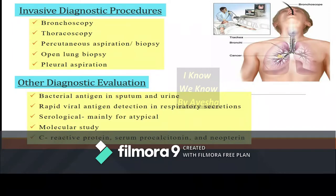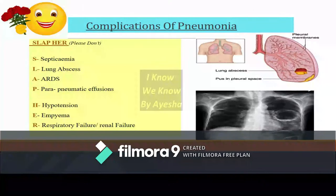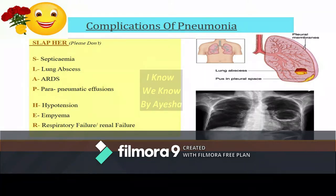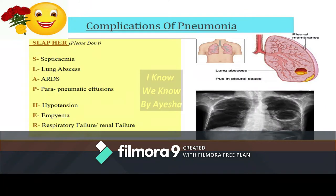Complications of pneumonia can be remembered with the mnemonic SLAP HER: Septicemia and Lung abscess, Acute respiratory distress syndrome (ARDS), Parapneumonic effusion, Hypotension, Empyema, and Respiratory or Renal failure.